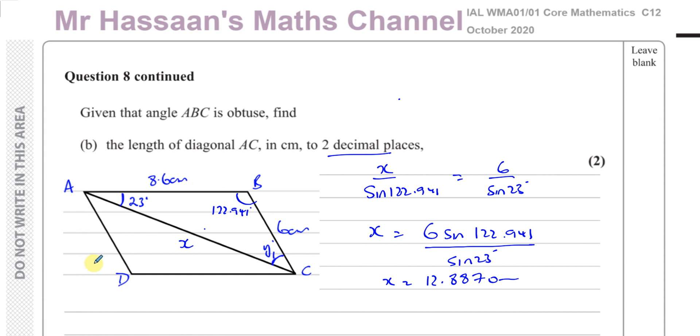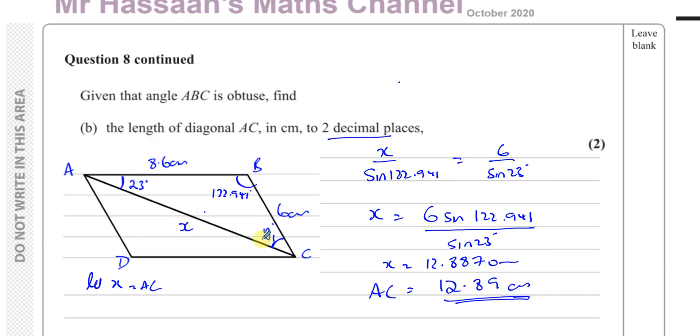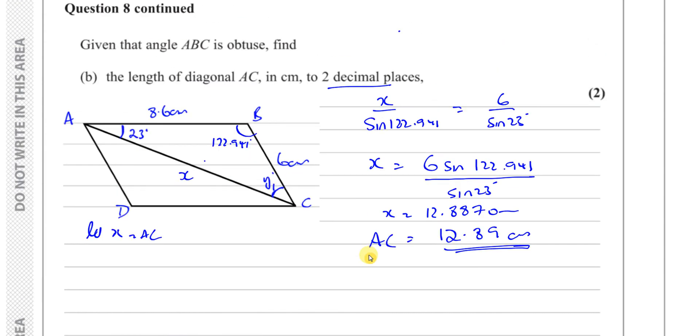So you say 12.8870, so that we want to round it here to two decimal places. So let X be AC. So we can say AC is therefore 12.89 to two decimal places, 12.89 centimeters. So there's the answer to part B. We could have also used the cosine rule, because we have two sides and the angle between them. But the sine rule is a bit easy if you can use it.